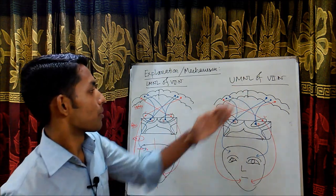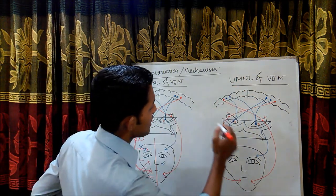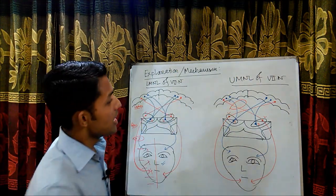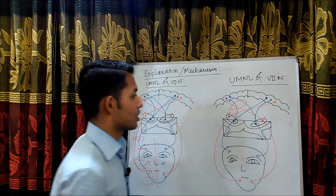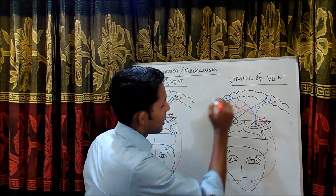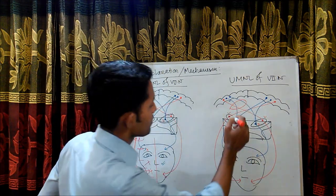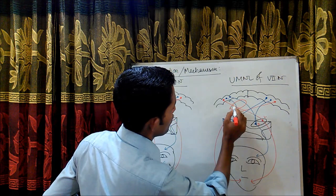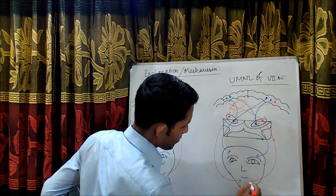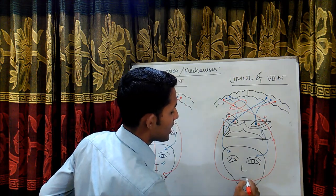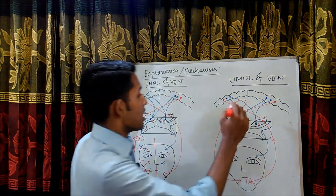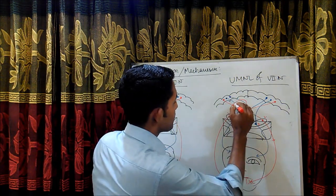In upper motor neuron type of facial nerve paralysis, the lesion is above the nucleus — this is called a supranuclear lesion. If there is a supranuclear lesion, all the fibers from that side of the cortex will get damaged. As a consequence, the muscles of the lower part of the face on the affected side will become paralyzed.